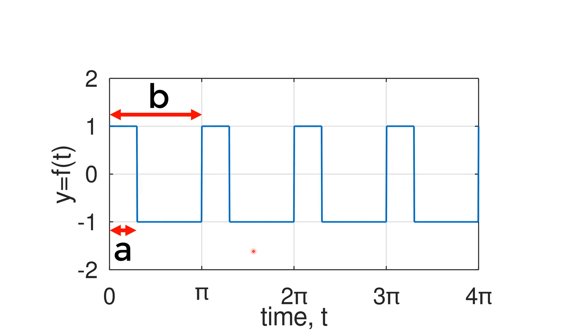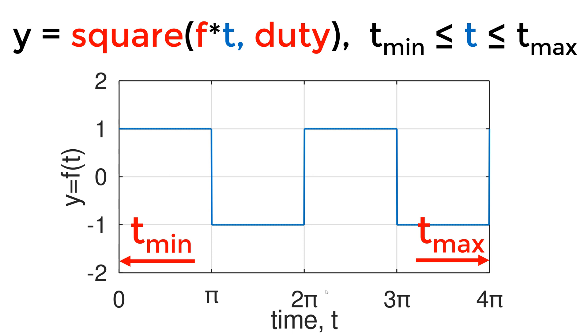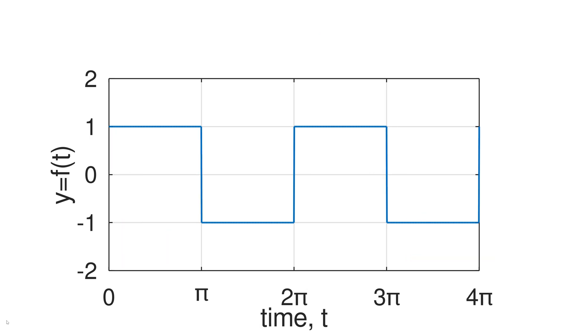The duty cycle is a ratio between the widths of the square waves, simply A over B in the plot. Since this is a scaled number, it can be anywhere between 0 and 100%. The default value is 50%. If you have a smaller width A, your duty cycle is smaller. I showed an example plot for the square wave with a duty cycle of 20%. The key is to generate the vector for the square wave function. If you use a custom duty cycle, it will override the default.